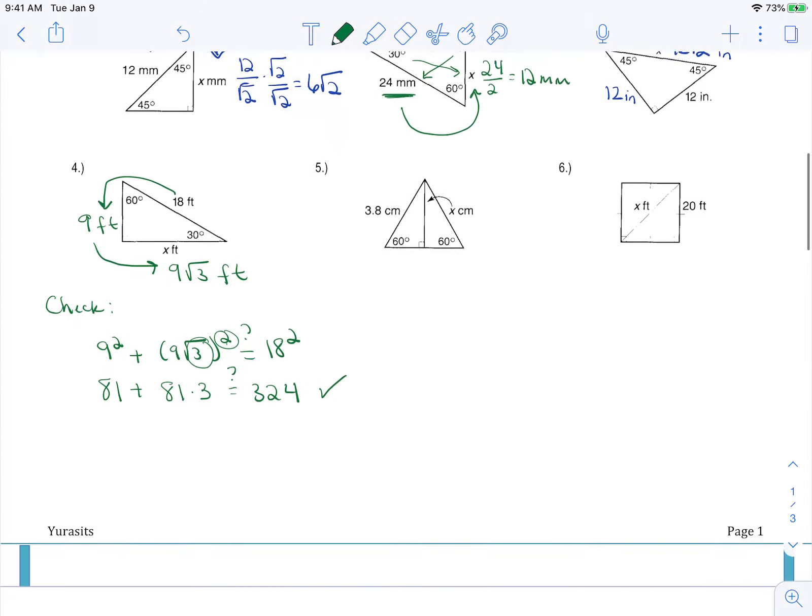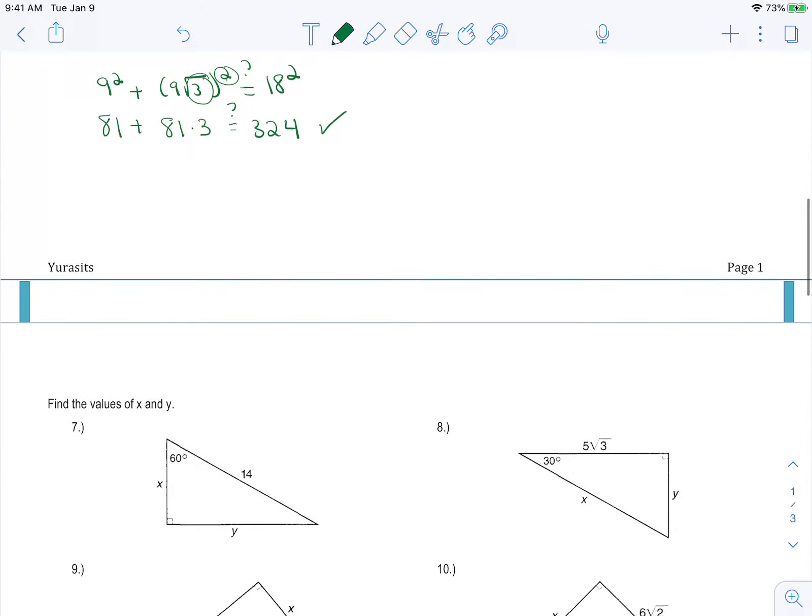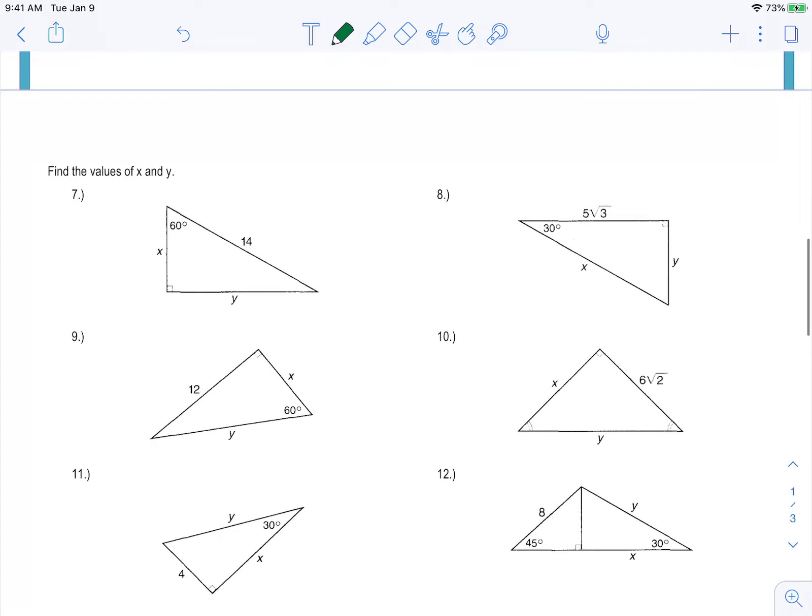Let me just go and see if we want to do one more. Let's go ahead and do 8 and 10. And then the completed one of these will be posted online. So if you want to try on your own. All right, so if I'm looking at 8, that's a 30-60-90 triangle.